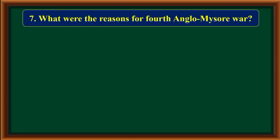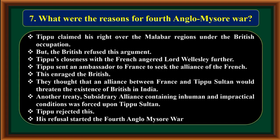What were the reasons for the Fourth Anglo-Mysore war? Tipu claimed his right over the Malabar regions under British occupation, but the British refused this argument. Tipu's closeness with the French angered Lord Wellesley further. Tipu sent an ambassador to France to seek a French alliance, which enraged the British, who feared that a France-Tipu alliance would threaten British existence in India. A subsidiary alliance containing inhuman and impractical conditions was forced upon Tipu Sultan. Tipu rejected this, and his refusal started the Fourth Anglo-Mysore war.